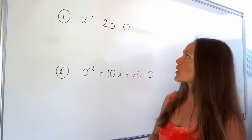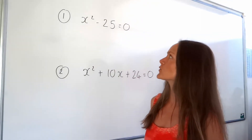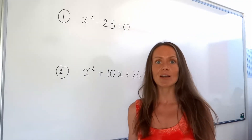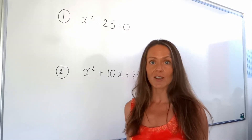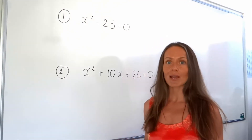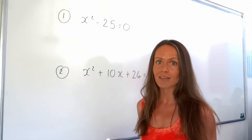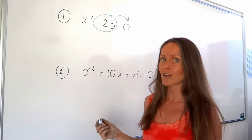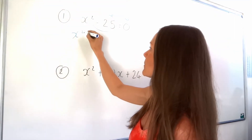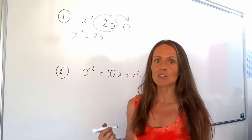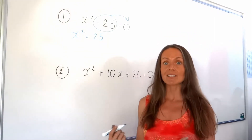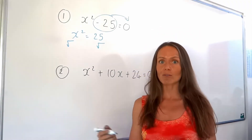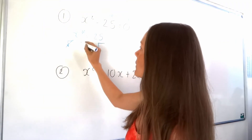If you look at the first one, I'm going to show you two different methods. In order to work out the value of x, we could use a method similar to solving linear equations, where you move everything away from the x value until x is by itself. That means moving that negative 25 to the other side so it becomes positive, and then getting rid of the squared — the opposite of squaring is square rooting — so you square root both sides of the equation. If you square root a square, it just cancels out and you're left with x.